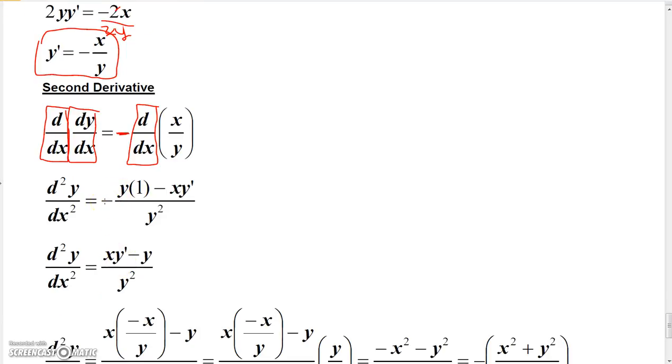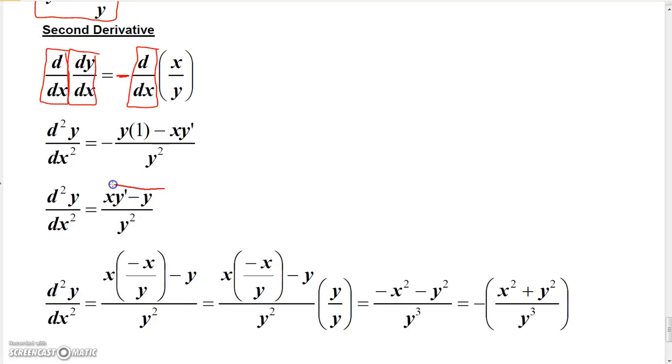So then I went ahead and distributed the minus through, and so that gave me a plus x, y prime minus y. And now, but here's the problem. This is actually not in terms of just x and y, but also x, y, and y prime.